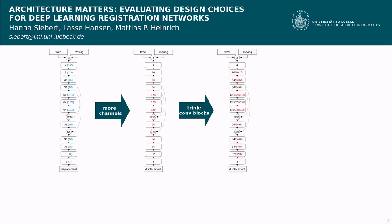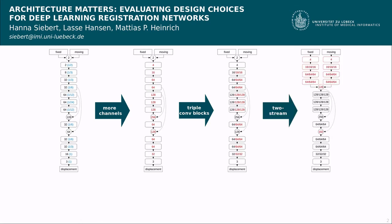We then extend the number of convolution, instance norm, ReLU sequences per resolution level to 3. Finally, we propose a two-stream architecture with separate encoder blocks for fixed and moving image.